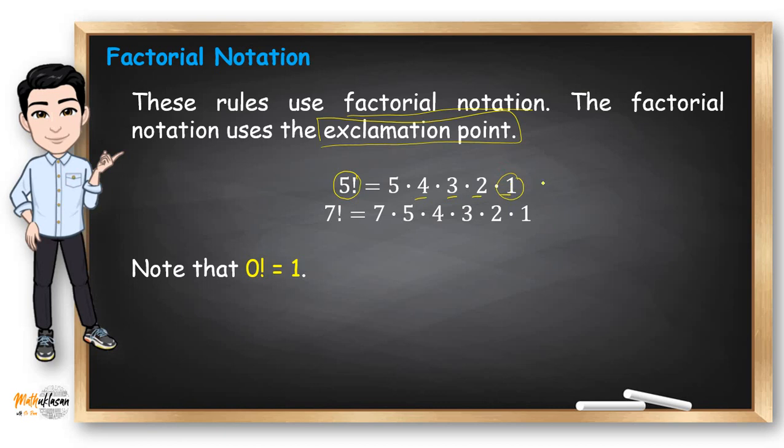So getting this, it's multiplication with a certain type of pattern. 5 times 4 times 3 times 2 times 1 is equal to 120. Therefore, 5 factorial is equal to 120.